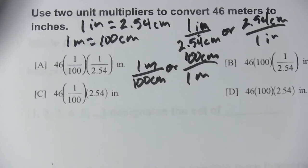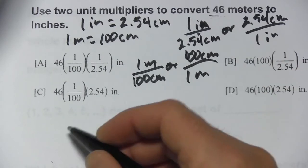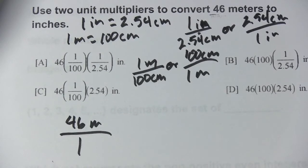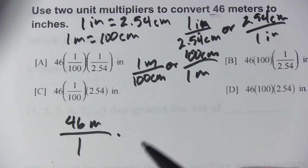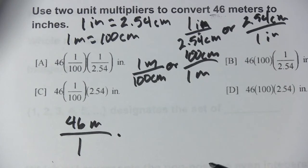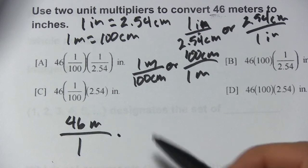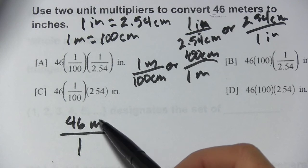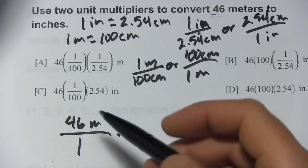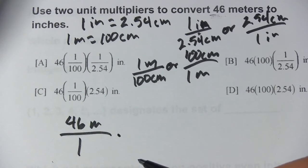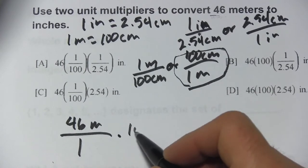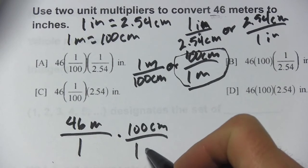Let me show you how we set this problem up. We're starting with 46 meters, so I'll write that as a fraction: 46 over 1. Now we multiply by conversion factor fractions to convert from meters into inches. We pick the right one to cancel units — since I've got meters on top, I want the one with meters on the bottom, which is 100 centimeters over 1 meter.